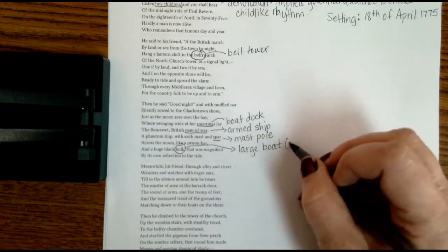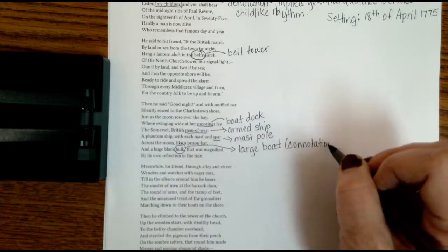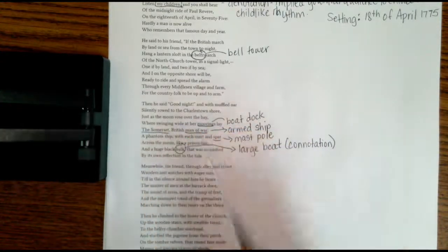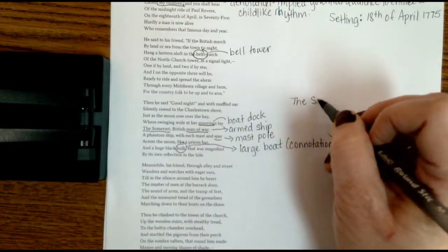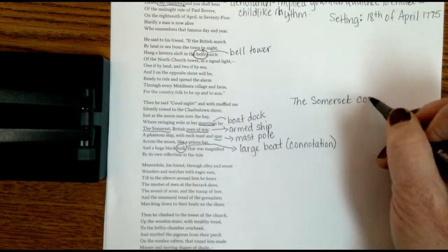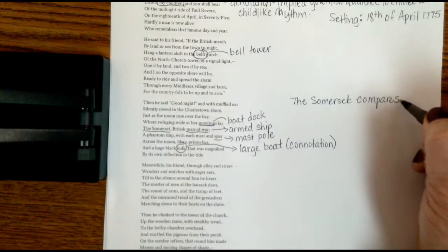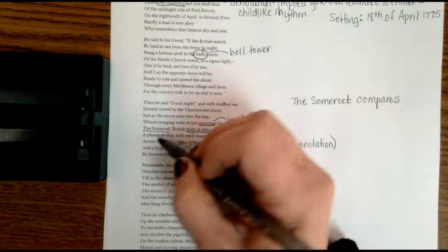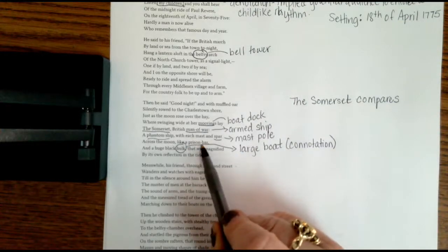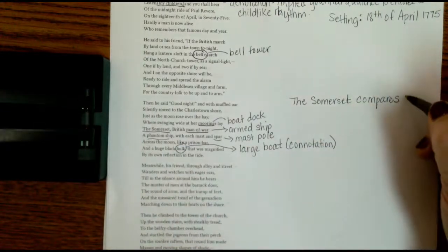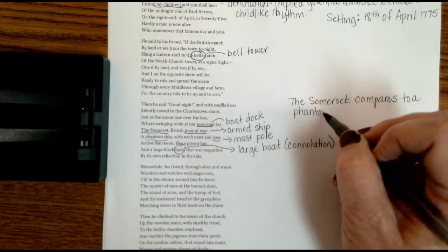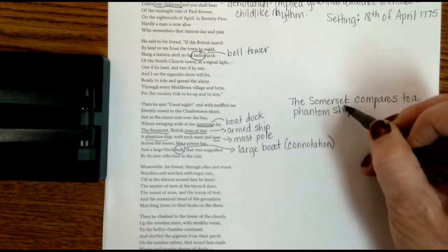So we've got a use of connotation right here. And then I want us to go back and underline the Somerset because that is the name of the British ship. And the Somerset, what Longfellow's doing here is he's comparing it to a phantom. We've got a phantom ship right here. He's comparing it to a prison. We've got a prison bar right here. And then he's also comparing it to a hulk. So we've got a little bit of use of metaphor going on here.